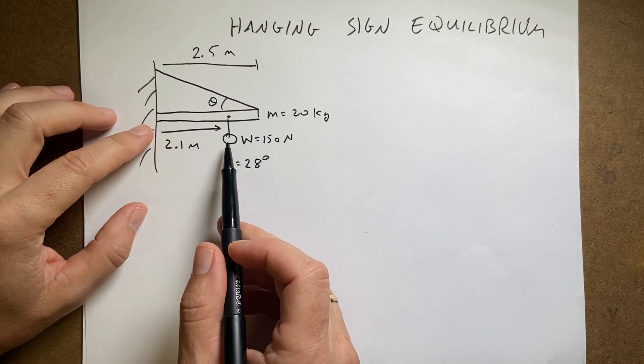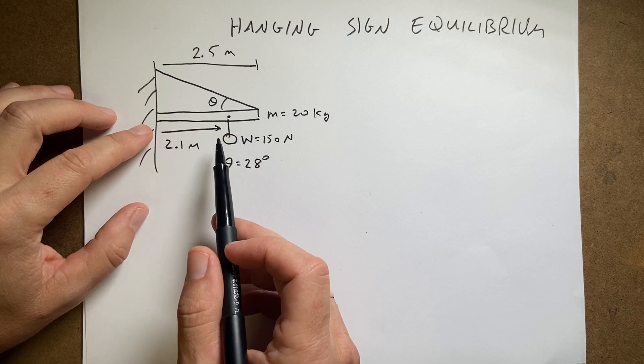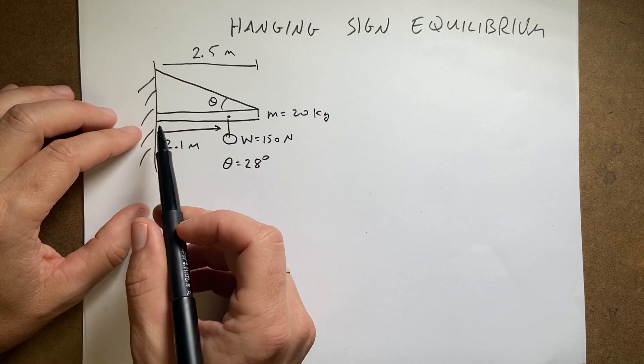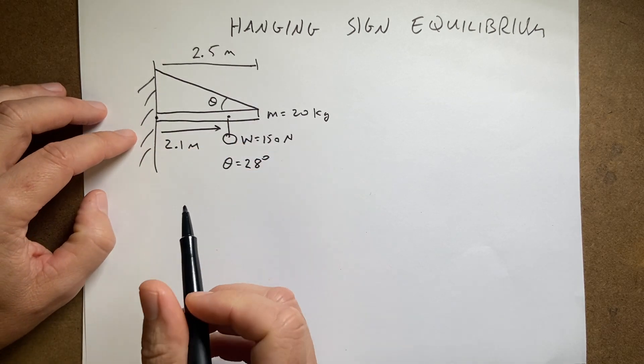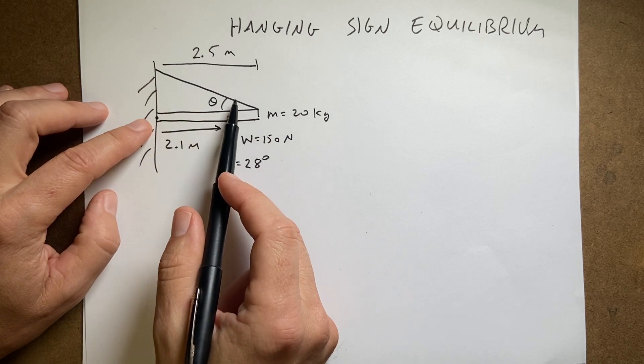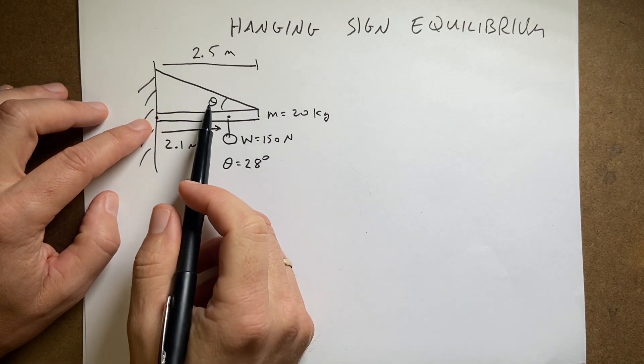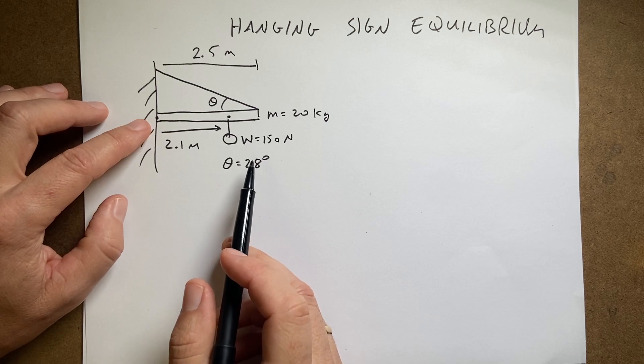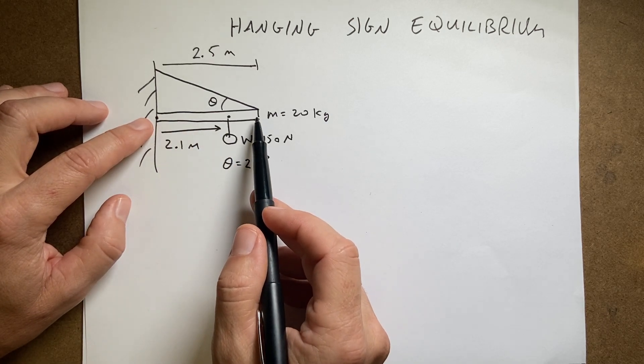So here's the deal, and I just have a mass instead of a sign because it doesn't really matter. So I have a beam right here. It's supported on this wall, and then there's also a cable connected to it, and this angle that it makes up here I said was 28 degrees.